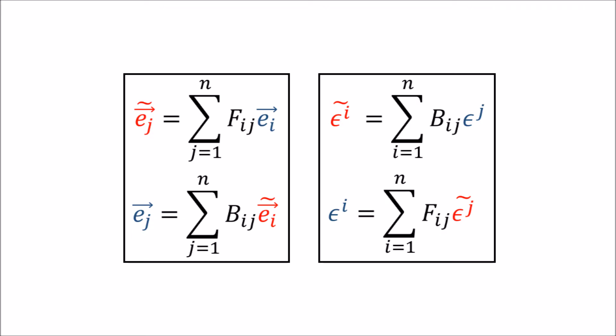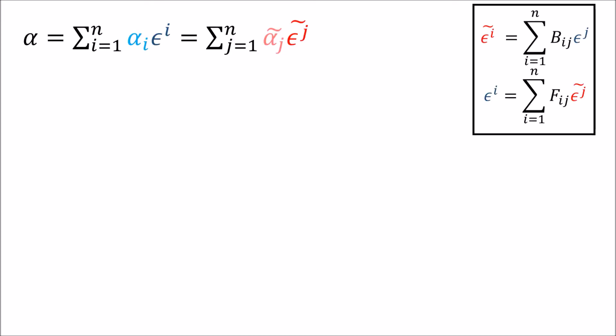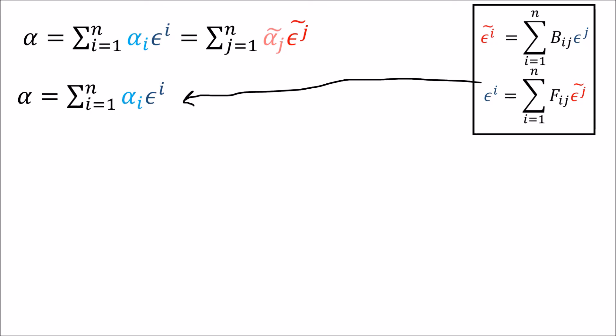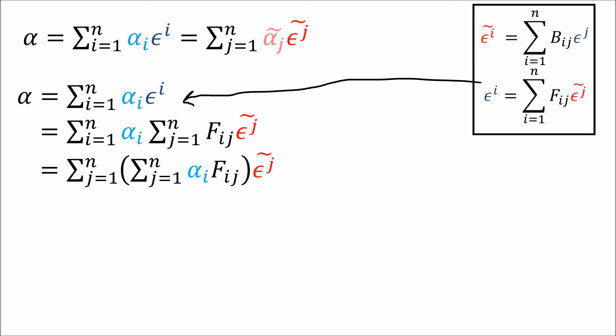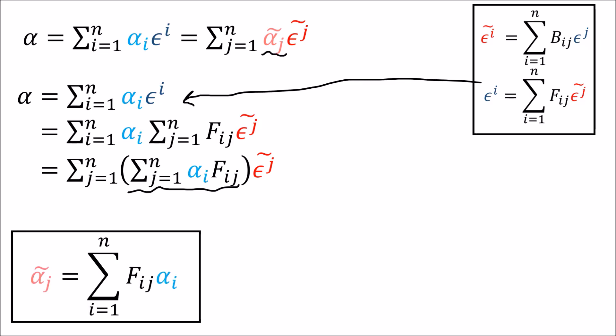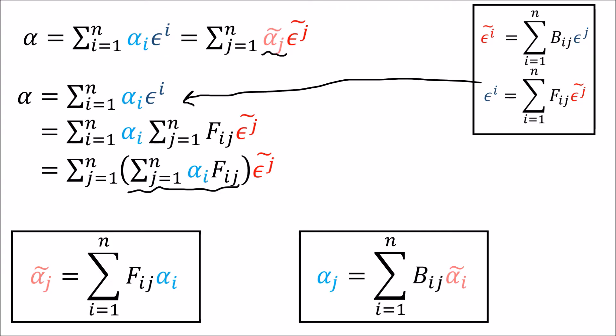Now that we know how basis co-vectors transform, figuring out how their components transform is easy. We write co-vector alpha as a sum of the old basis co-vectors, use the forward transformation to rewrite the old basis in terms of the new, rearrange the sums, and see that the middle part must equal the new co-vector components alpha-tilde. So the forward transform takes us from old co-vector components to new, and the backward transformation goes from new co-vector components to old. Co-vector components transform in the same way that the basis vectors do.